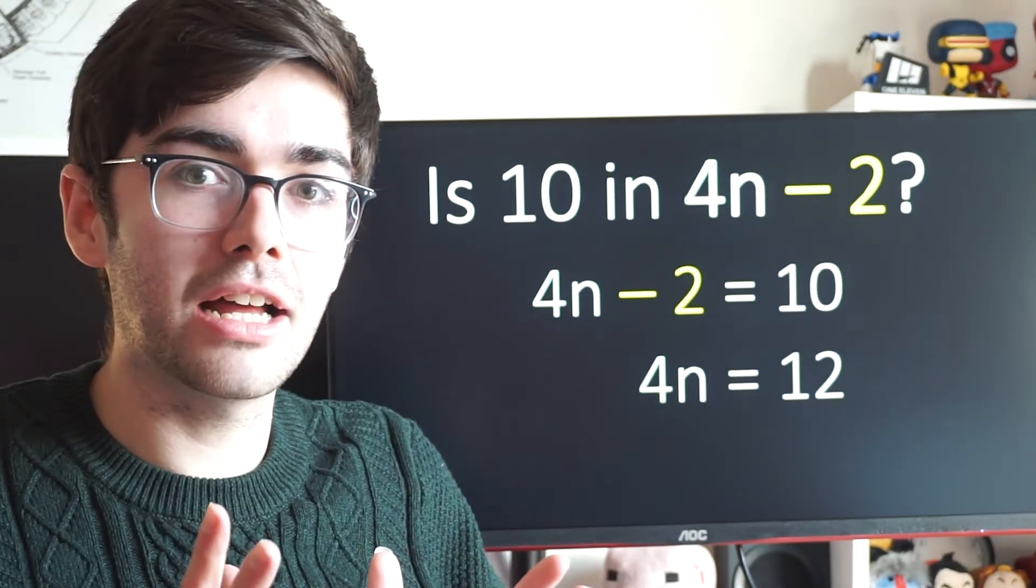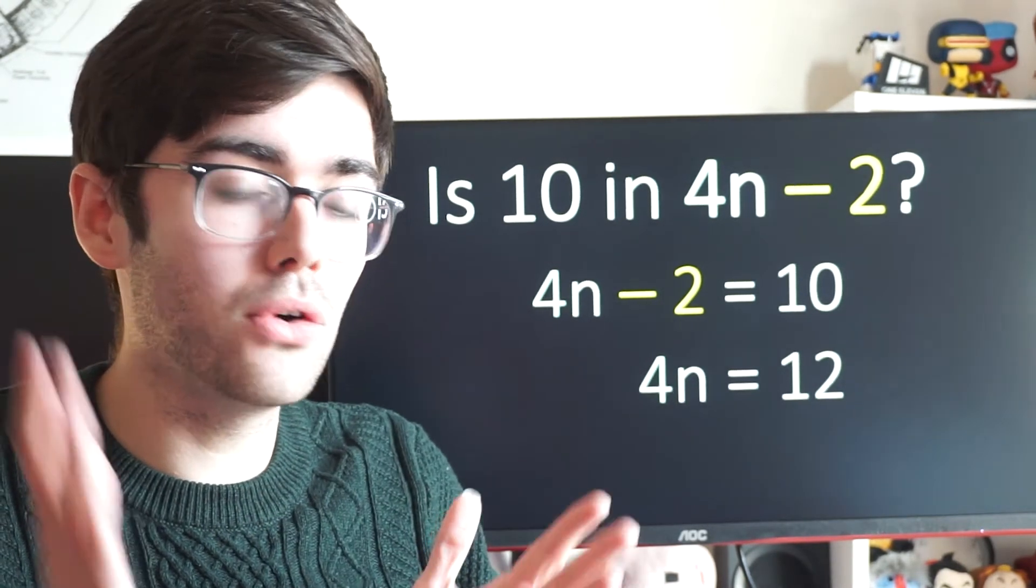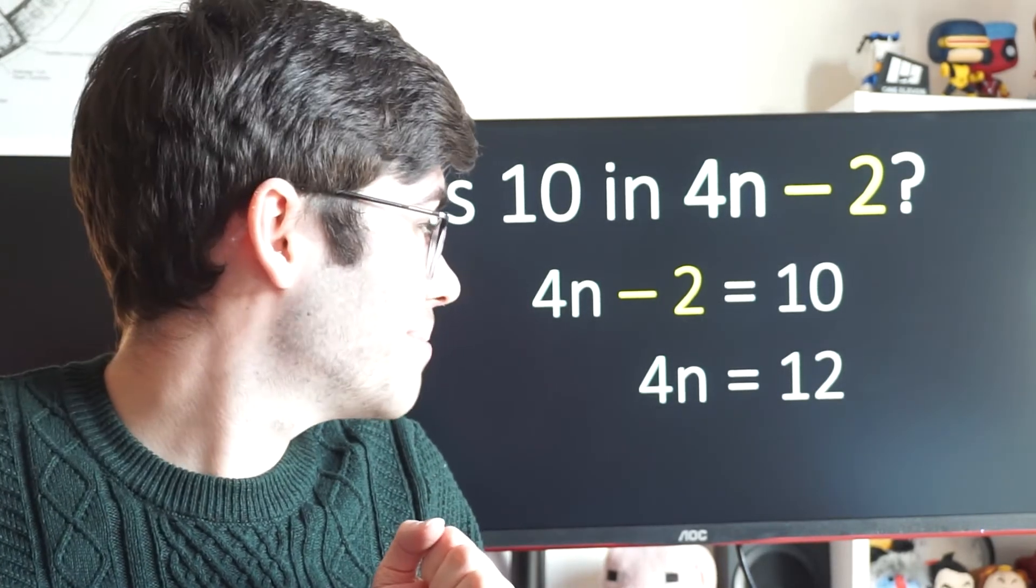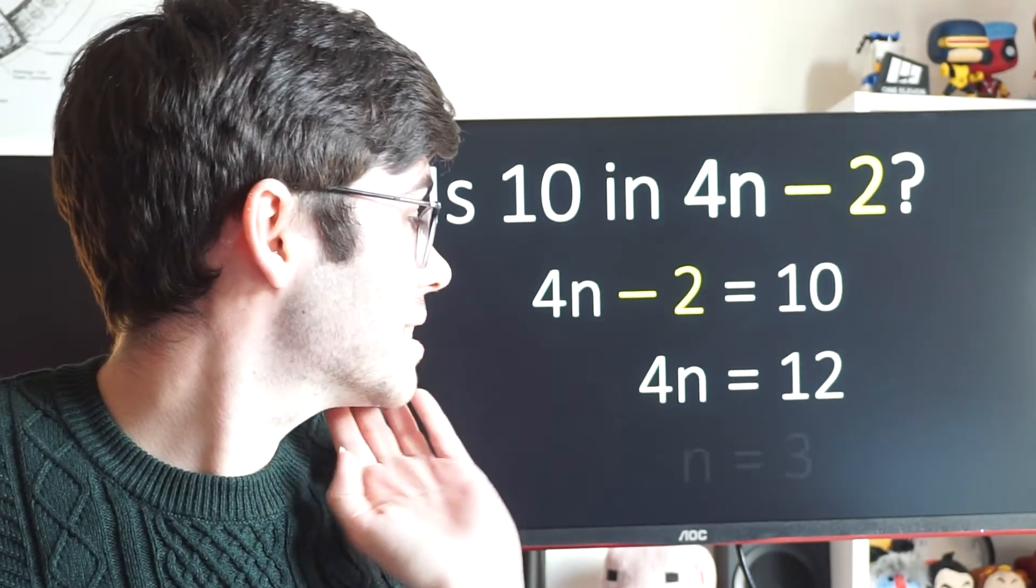And then I just want n by itself. I don't want 4 times n. What's the opposite of times n by 4? Dividing by 4. Thank you very much. On both sides. So, we get n equals 3.